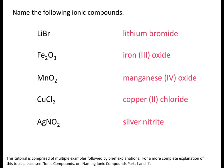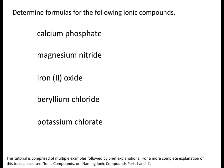Now let's determine the formulas when given the name of an ionic compound. For calcium phosphate, the first thing is to determine if phosphate is a polyatomic ion or an element with a changed name. If you see -ate at the end, you know you have a polyatomic ion. Calcium forms ions with a charge of plus two; phosphate is PO4 with a charge of minus three. So to get a neutral compound you must have three calcium ions and two phosphate ions: Ca3(PO4)2.